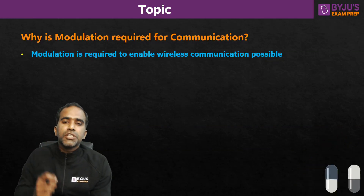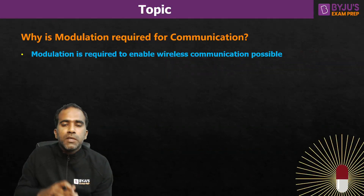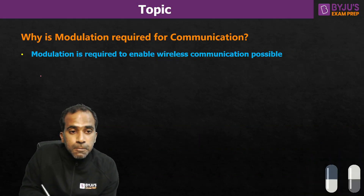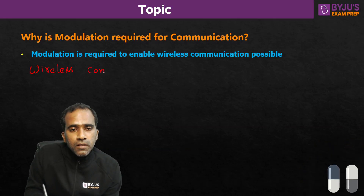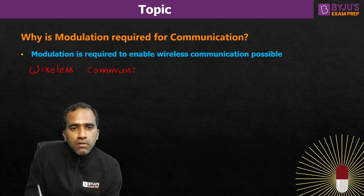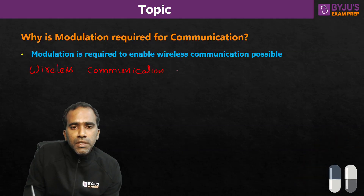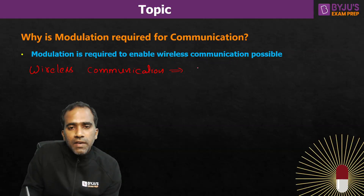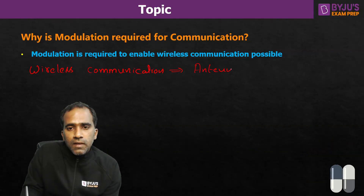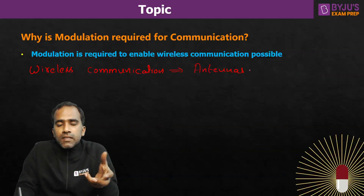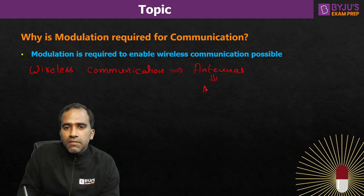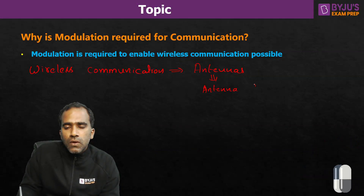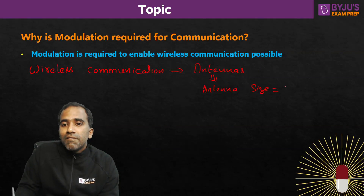If you want to do wireless communication, without modulation it is not possible. For wireless communication to happen, we need antennas — without antennas we cannot do wireless communication. What decides the antenna size? Antenna size is proportional to wavelength — this is a very important parameter.